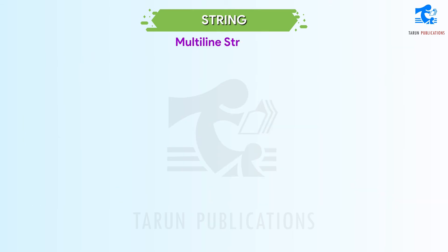Multiline Strings. In Python, a multiline string is enclosed within three single quotes or three double quotes. Any text, number, quotes, space, or new lines enclosed within the quotes are considered a part of the string.